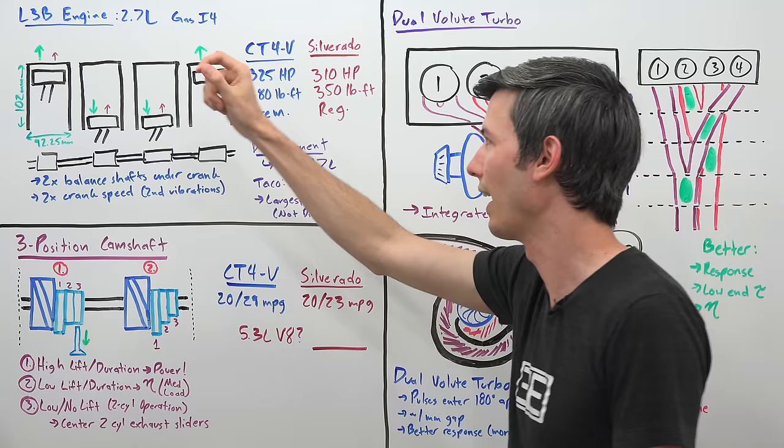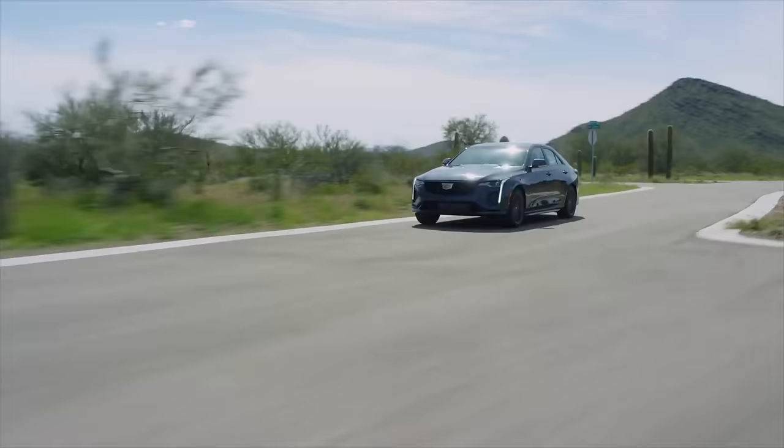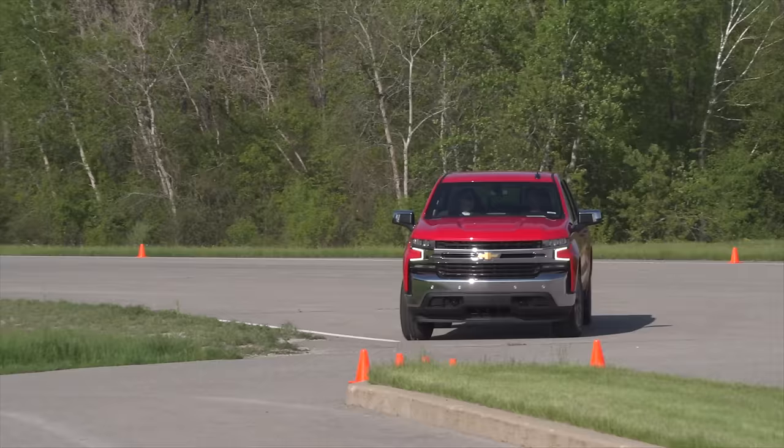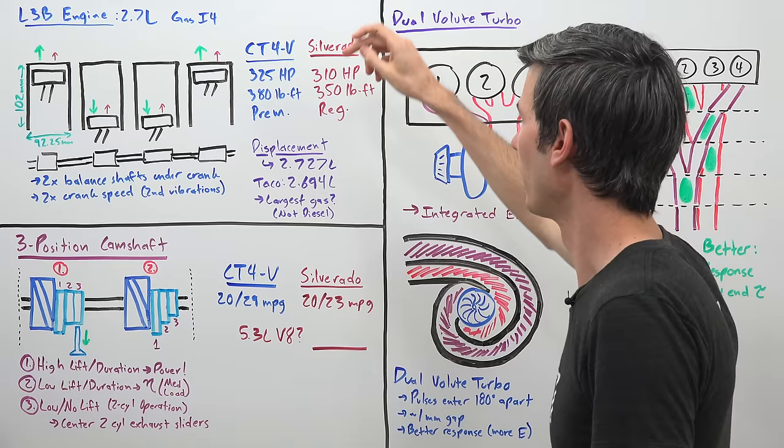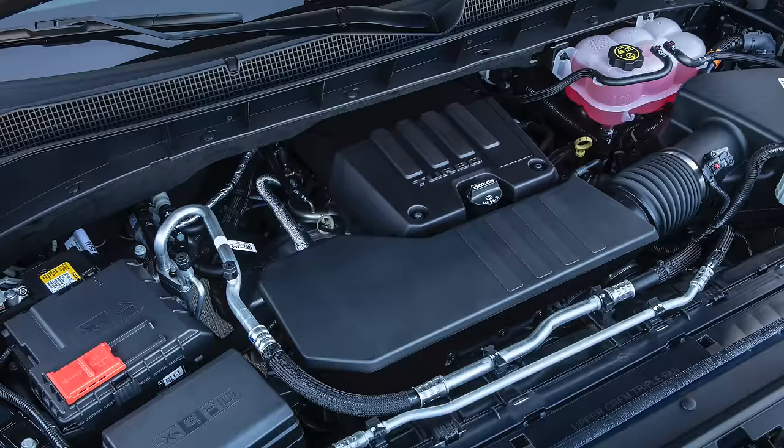So the L3B engine is used in two different applications by GM currently. It is used in the Cadillac CT4V and it is used in the Chevy Silverado which is a truck. In the CT4V it makes 325 horsepower, 380 pound-feet of torque using premium gas. In the Silverado it's making 310 horsepower, 350 pound-feet of torque using regular gas.